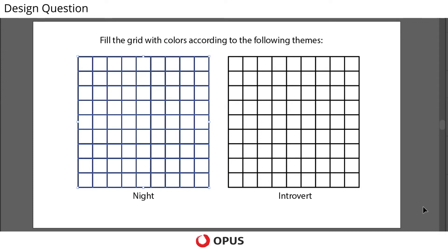Hello everyone, this is Rahul from Opus. Today we are going to solve this question which states: fill the grid with colors according to the following themes. In this kind of question, we first have to understand what the theme is. When you see the theme, you try to visualize a scene in that theme and understand what kind of colors that can evoke in your mind when you particularly visualize a scene in a particular theme.